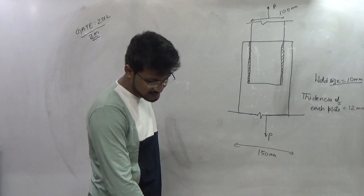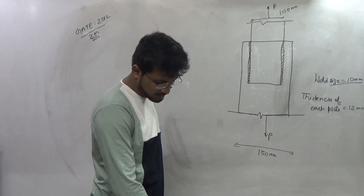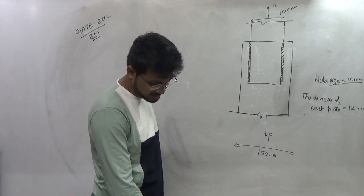The yield stress and the ultimate tensile stress of steel are 250 MPa and 410 MPa.